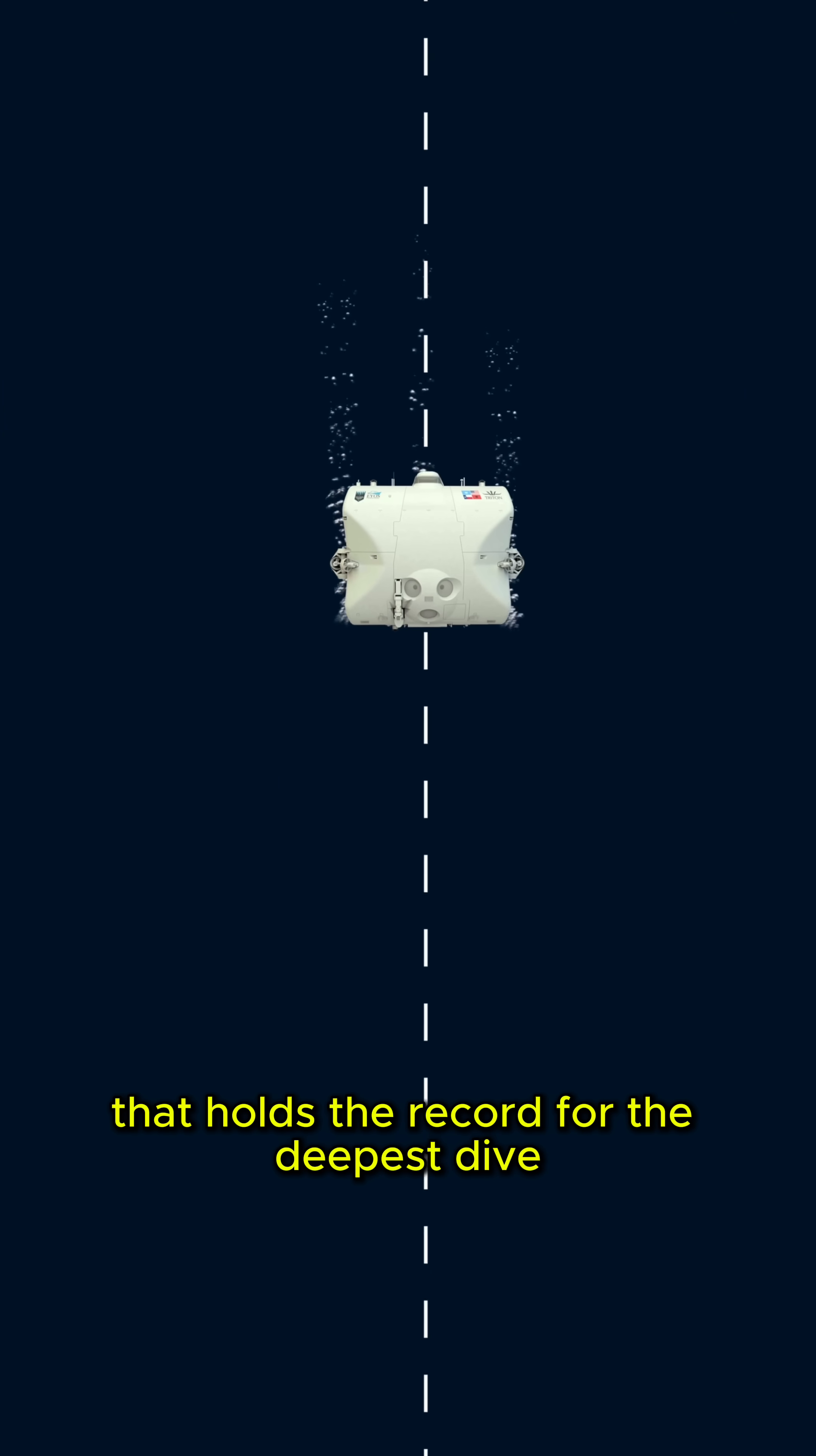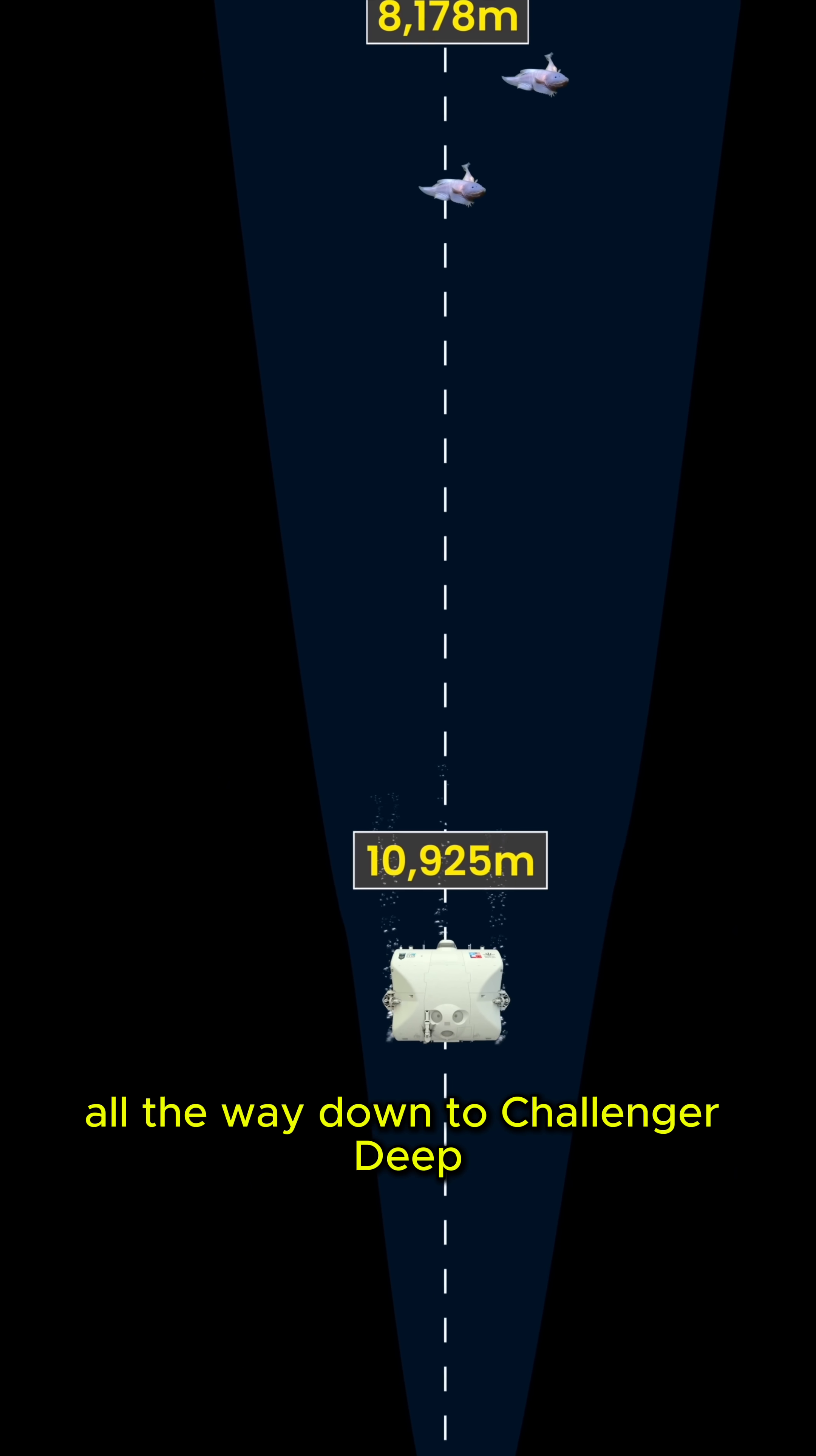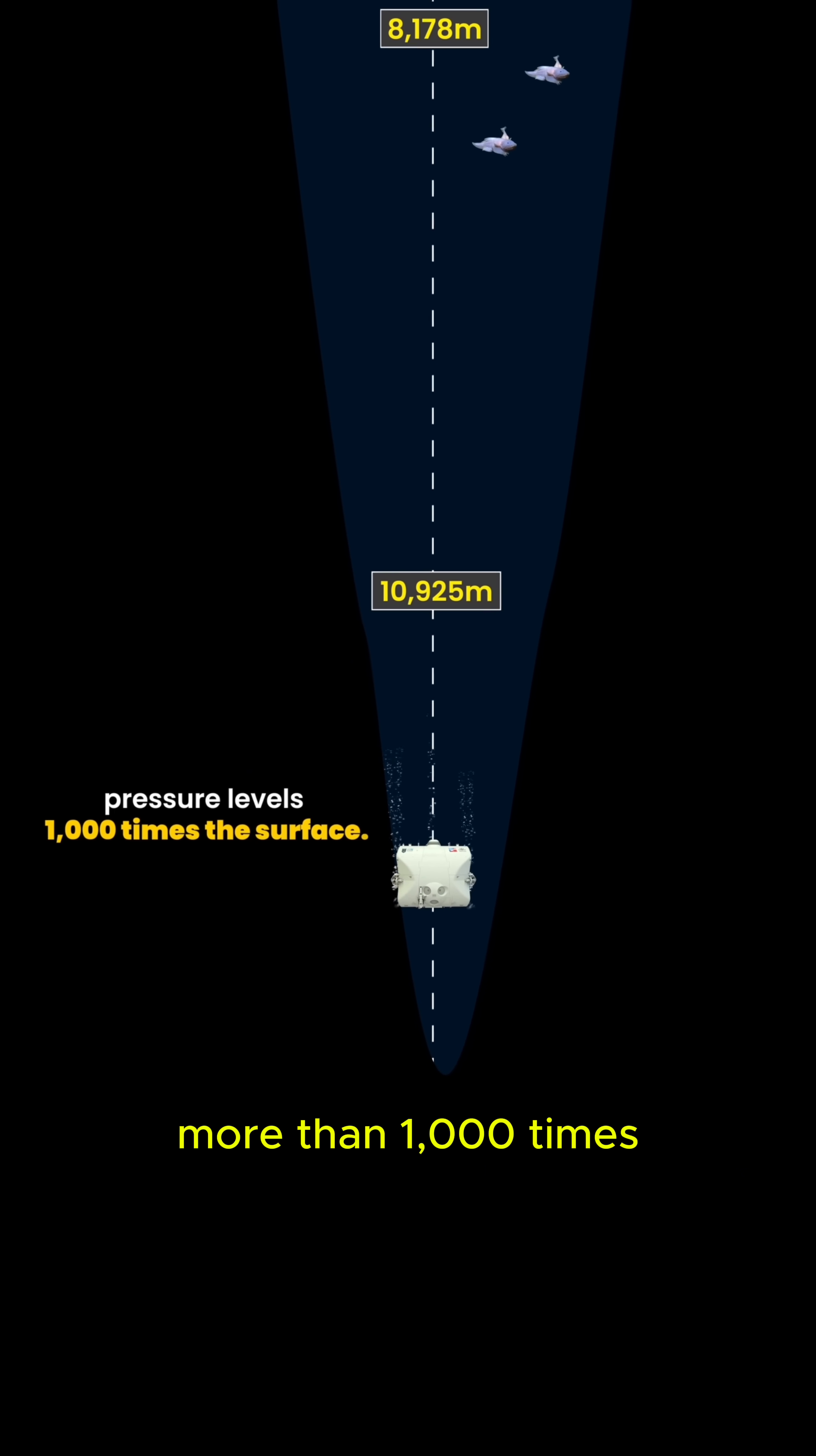Now the submersible that holds the record for the deepest dive by a crewed vessel? It would keep diving, passing the deepest fish at 8178 meters all the way down to Challenger Deep, which at 10,925 meters is the deepest point in the ocean where pressure levels can be more than 1000 times the surface, still intact.